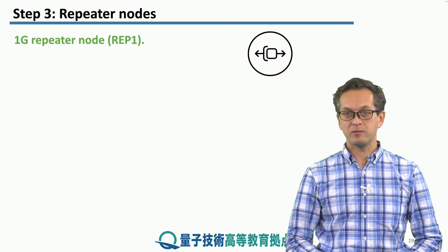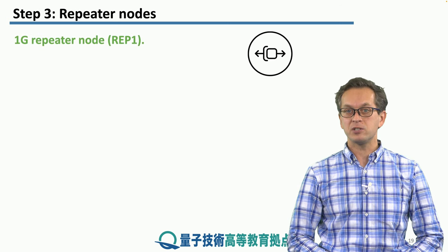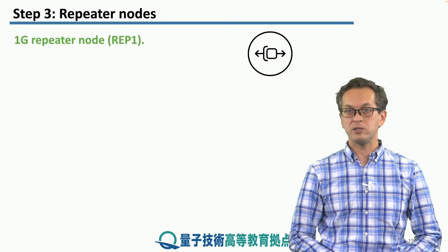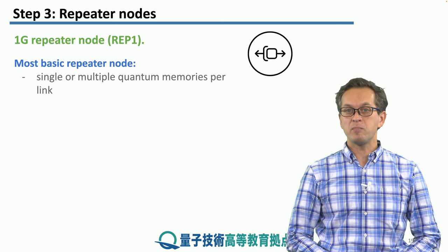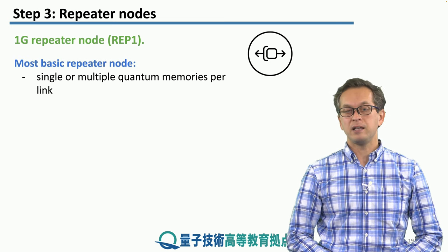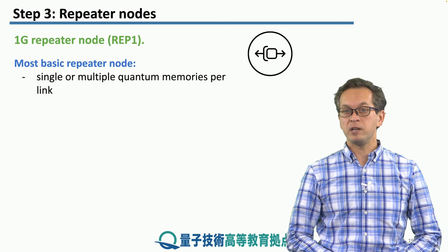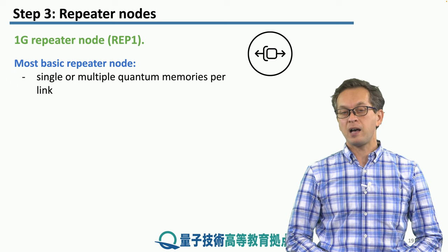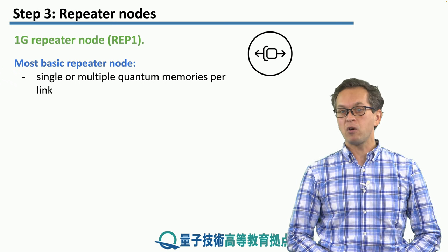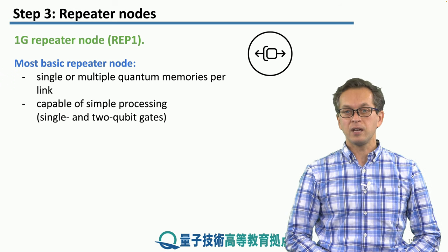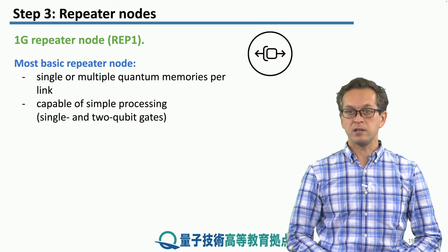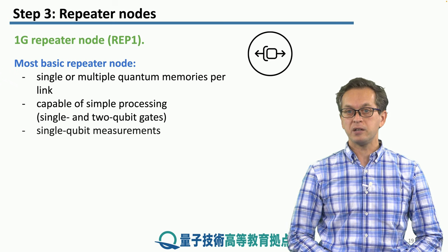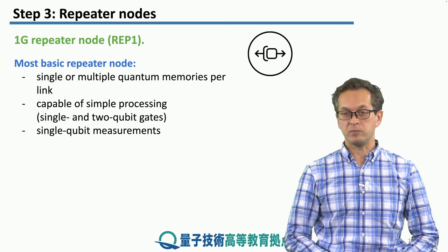We're going to begin with the simplest one: the first generation repeater node, or 1G repeater node. This is the most basic repeater node and it can be equipped with quantum memories, either in the form of a single memory or multiple memories per link. It can do some simple processing such as single and two qubit gates and it can perform single qubit measurements.